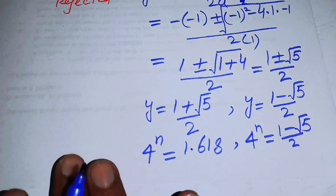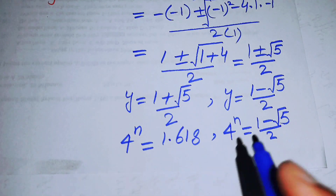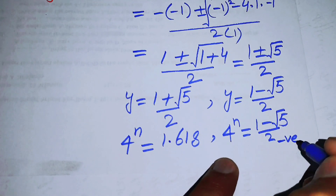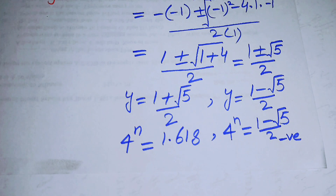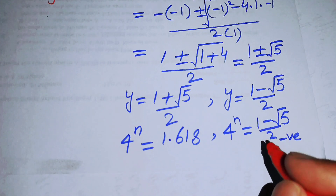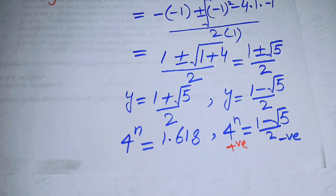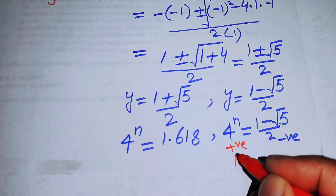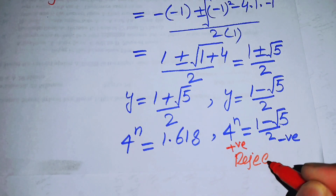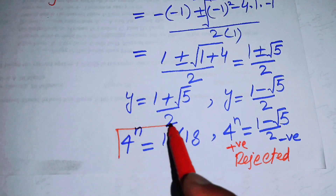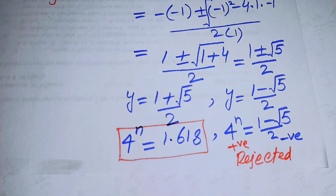In the second case, the right-hand side becomes a negative value, while the left-hand side is always positive. Since an exponential function cannot equal a negative value, we reject this case and proceed with the first case only.